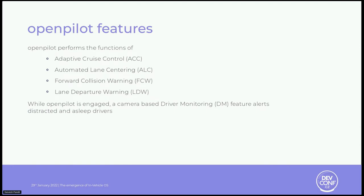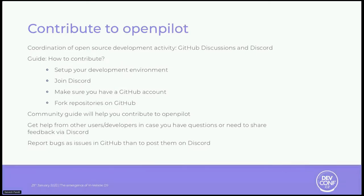Currently, OpenPilot performs the functions of adaptive cruise control, maintaining a safe following distance and staying within the speed limit. It is capable of automated lane centering, relieving the driver from the task of steering, as well as forward collision warning and lane departure warning. OpenPilot functions for a growing variety of supported car makes, models, and model years. Additionally, while OpenPilot is engaged, a camera-based driver monitoring feature alerts distracted and drowsy drivers, further increasing overall safety.